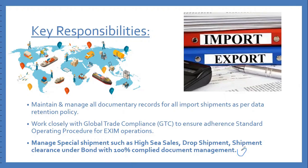Another type is shipment clearance under bond with hundred percent compliance document management. Sometimes the shipment we are importing requires giving a bond to customs, where we commit to paying the duty. In the case of EPCG and advance license, at that particular time we will not pay any duty because we are using a license, so in this case we have to give the bond to the customs.